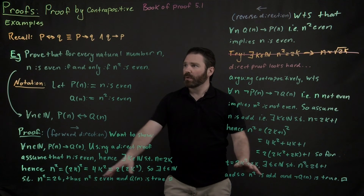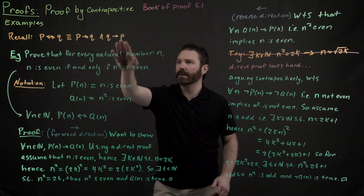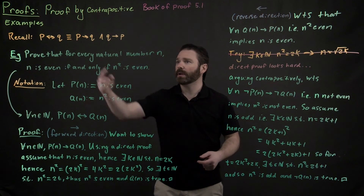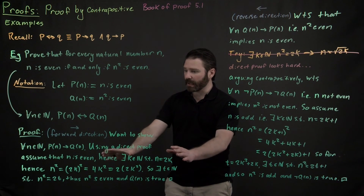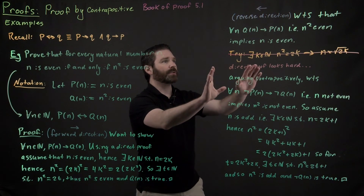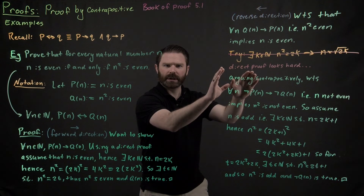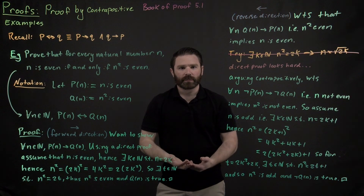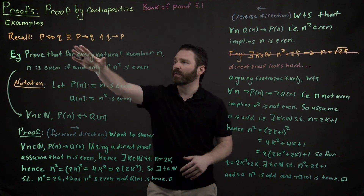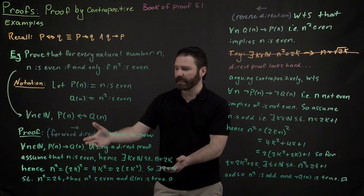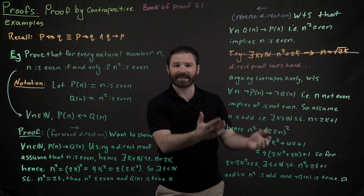In this example, we had a biconditional and had to show both the forward direction and the reverse direction. It will often be helpful to use different proof techniques for each direction. In the forward direction, we could simply use a direct proof and it was straightforward. In the reverse direction, a direct proof was more difficult, so we used a proof by contrapositive and it made it easier. Any proof technique can be applicable — if you have a biconditional, you might need one technique for the forward direction and a different one for the reverse.